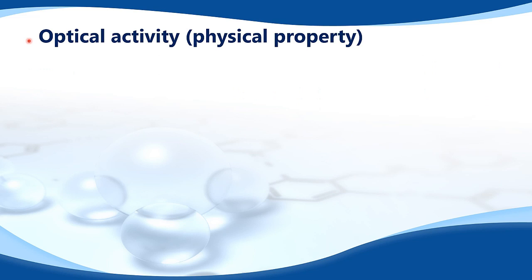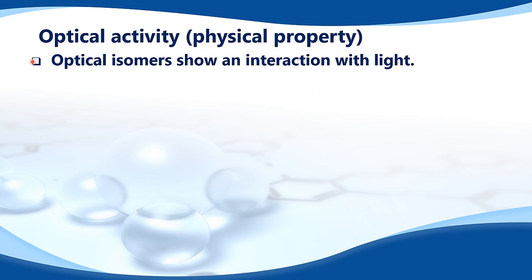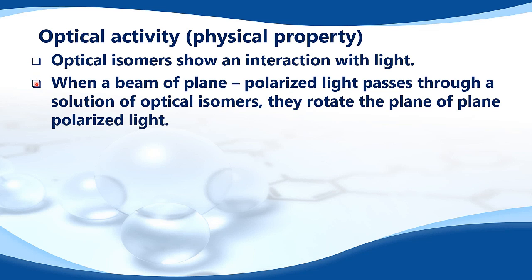Optical activity is a physical property. Optical isomers show an interaction with light — when a beam of plane polarized light passes through a solution of optical isomers, they rotate the plane of plane polarized light.